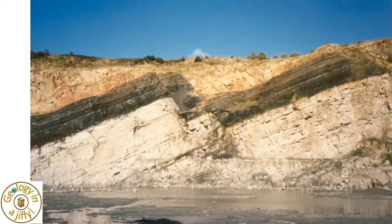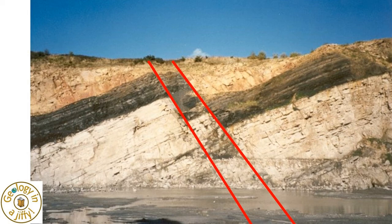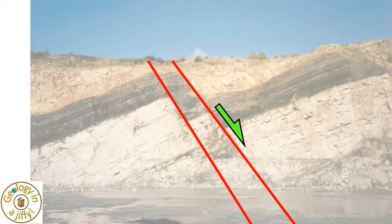This quarry face also shows two clear normal faults, the hanging walls having slid downwards to the right.